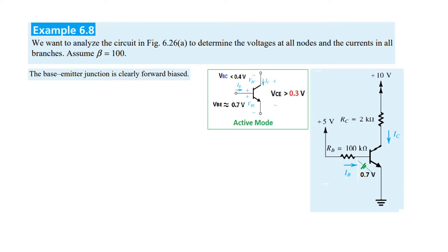Let's do the easy thing first and find the current IB. Current IB will be 5 volts minus VBE (0.7V) divided by RB, which is 100kΩ. Therefore, the current is 0.043 milliamperes.